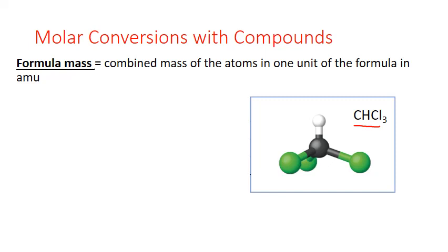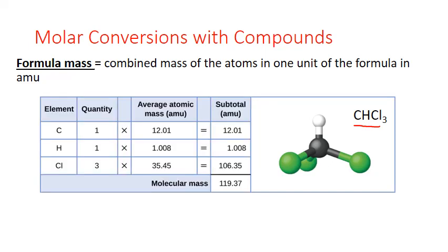Now in order to calculate the formula mass, I simply have to use the periodic table masses for each atom present in the molecule and actually add those together. So I have one carbon atom in that molecule. I multiply it by the periodic table mass, the average atomic mass in AMU for carbon, 12.01.